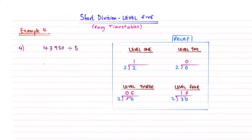Right. So let's move on to example number 4. So curly brace and our line. And then let's write these numbers underneath. So we've got a 4, a 3, 9, 5, and a 0. So 43,950. And we're going to divide this amongst five things.